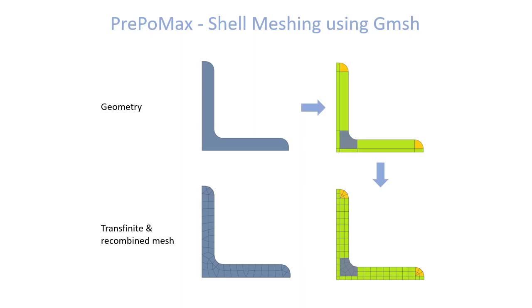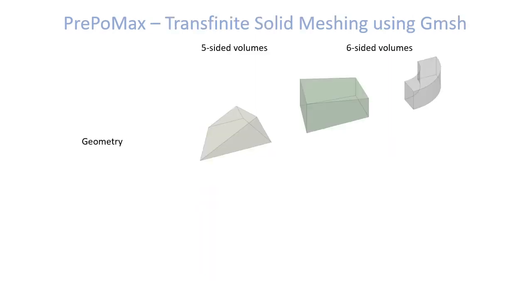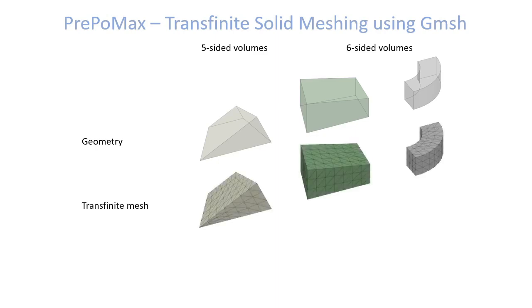The next thing I would like to present are transfinite meshes of solid geometries. For example, here we have three different geometries. The first is a five-sided volume which consists of three-sided and four-sided surfaces. The second and third geometries are six-sided volumes that consist of four-sided faces.